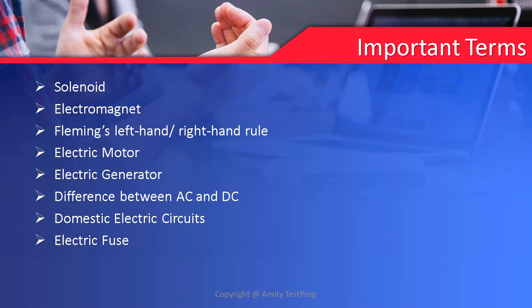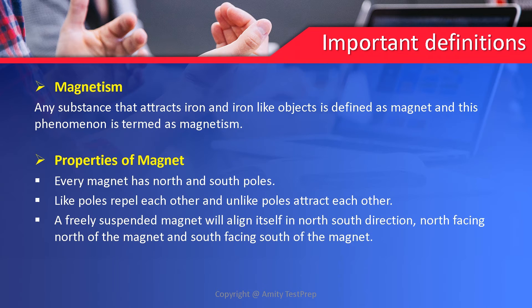Let us begin our journey and discuss those things in detail. The first one is magnetism. Any substance that attracts iron or iron-like objects is defined as a magnet, and this phenomenon is termed as magnetism. Magnetism is basically the force of attraction of a magnet.